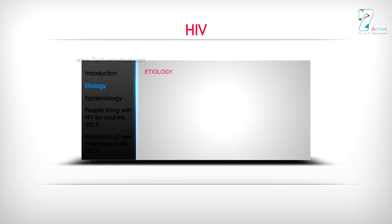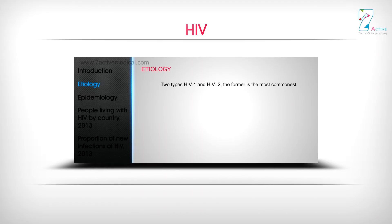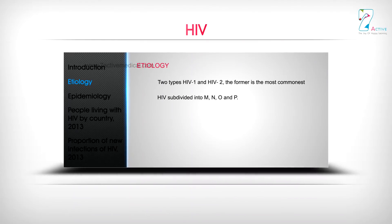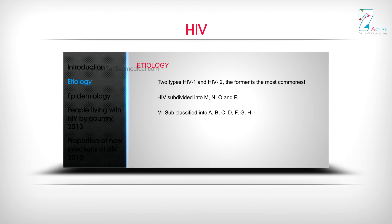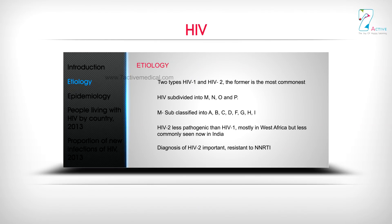Etiology: There are two types — HIV-1 and HIV-2. The former is the most common. HIV-1 is sub-divided into groups M, N, O, and P. Group M is further subclassified into subtypes A, B, C, D, F, G, H, and I. HIV-2 is less pathogenic than HIV-1 and is mostly found in West Africa, but is less commonly seen now in India.